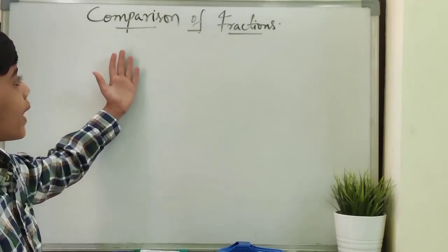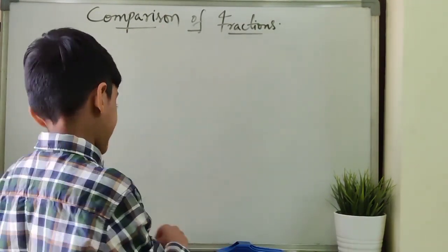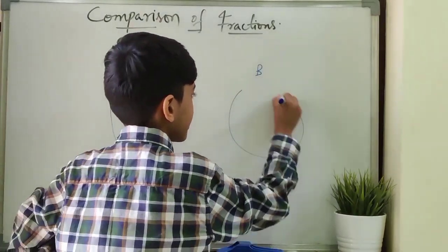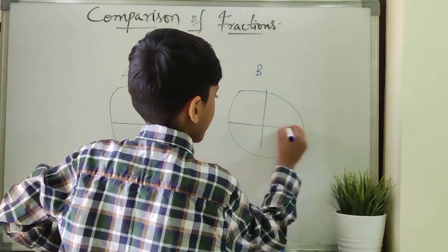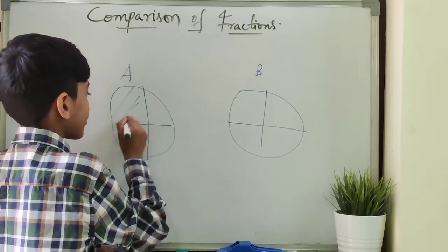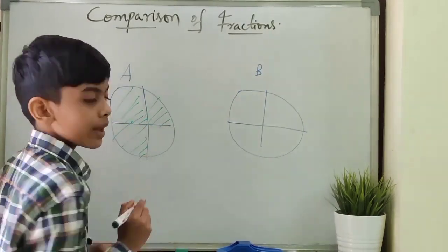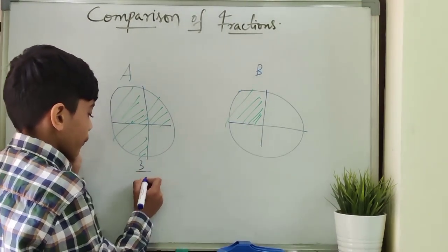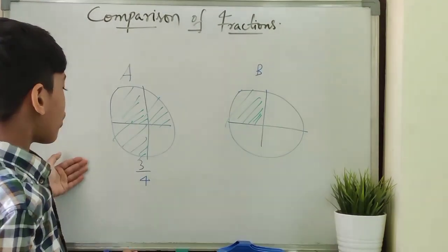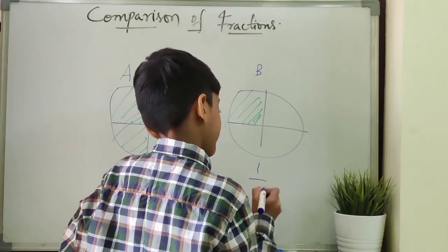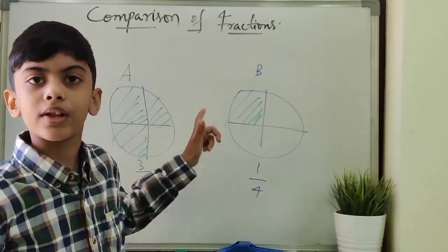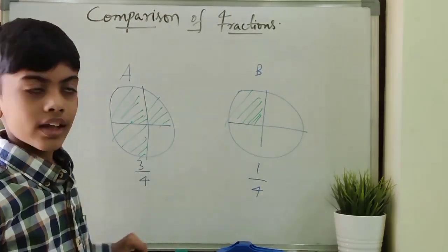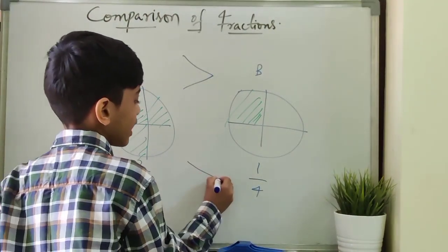Now, let's see how to compare fractions. Suppose person A ate 3 slices of his pizza and person B ate only 1 slice of his pizza. Here the fraction is 3 by 4 as 3 parts are eaten in 4 equal parts. Next, it is 1 by 4 as only 1 slice is eaten in 4 equal slices. Clearly, we can see person A ate more than person B, so 3 by 4 is greater than 1 by 4.